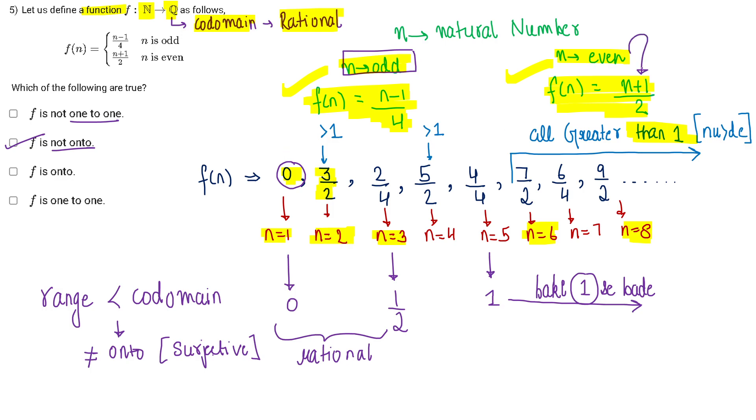You put even numbers here, each different even number gives you a different value. Similarly, for different odd numbers you're getting different function values. Therefore, for each x value you have a unique y value. Okay?